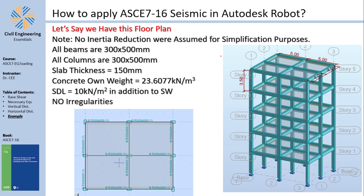Our entire structure is made of reinforced concrete frames, with some simplifications because reinforced concrete frames in 3D are not that easy to model. All beams are 300 by 500 millimeters; all columns are 300 by 400 millimeters — notice the orientation, some are horizontal and some are vertical. The unit weight of concrete is 23.6077 kN/m³, which is needed for dead load calculations, and the slab thickness is 150 millimeters. There is also a superimposed dead load of 10 kN/m² in addition to self-weight.